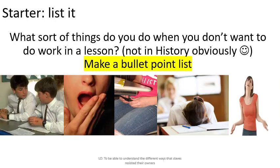For the starter activity, make a bullet point list in your books or on paper. Think about the sorts of things you do when you don't want to do work in a lesson — in the dull ones, not history of course. There are some pictures that might help you. Take a couple of minutes to do that, then go through some responses and add things to your list if someone says something you didn't write down.